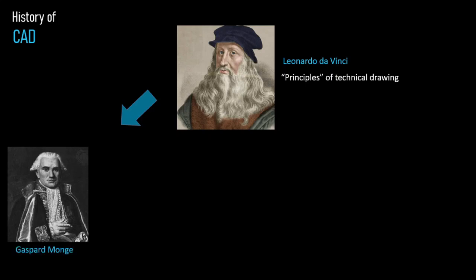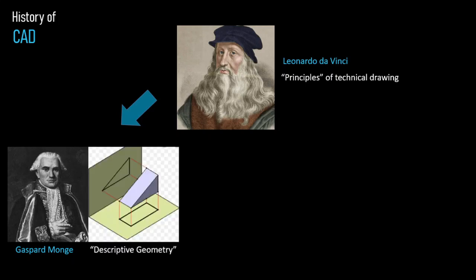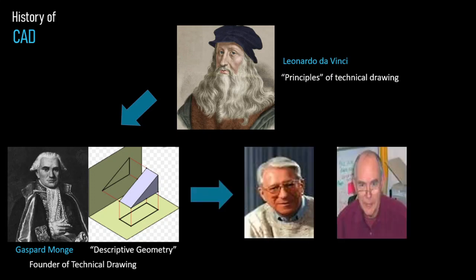Years after Leonardo da Vinci, a French mathematician named Gaspard Monge was able to further develop the principle of technical drawing through descriptive geometry. His book was published in the year 1799, and because of this, Gaspard Monge was named the founder of technical drawing. Centuries later, we now have the persons considered as the fathers of Computer Aided Drafting: Patrick Hanraty and Ivan Sutherland.